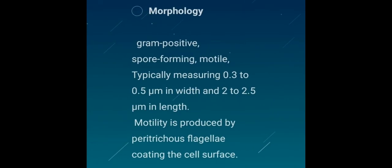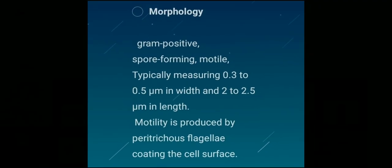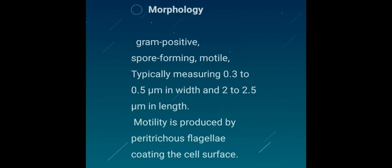Morphology: Clostridium tetani is a gram-positive cylindrical bacillus. It occurs singly and in pairs. It is non-capsulated and motile by peritrichous flagella. Peritrichous flagella means the full body of the bacterium consists of flagella.